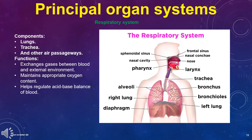The respiratory system components are the lungs, trachea, and other air passageways. Its functions are: exchanges gases between blood and the external environment; maintains appropriate oxygen content; and helps regulate the acid-base balance of blood.